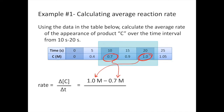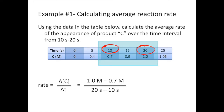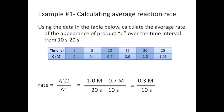Our final concentration of C minus our initial concentration of C — which is 0.7 molar — gives us the change in concentration over the change in time: final time minus initial time. The concentration of C changed by 0.3 molar over a time interval of 10 seconds, giving us an average rate of 0.03 molar per second.